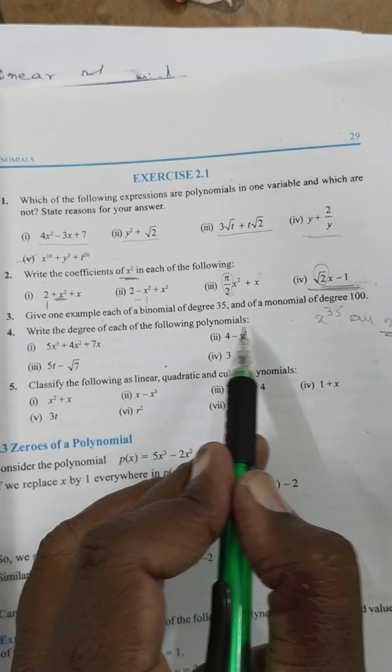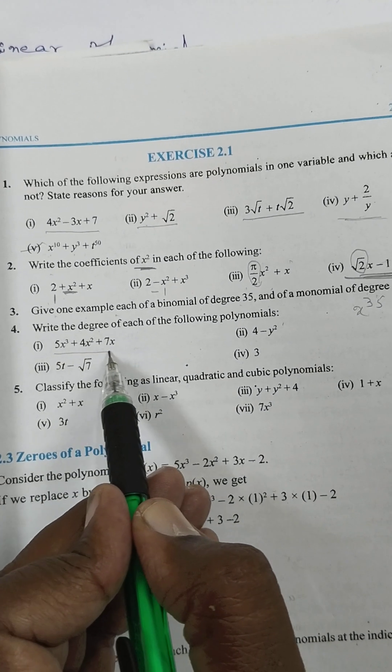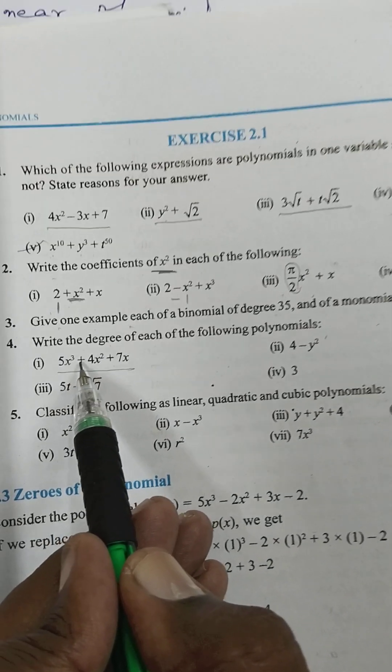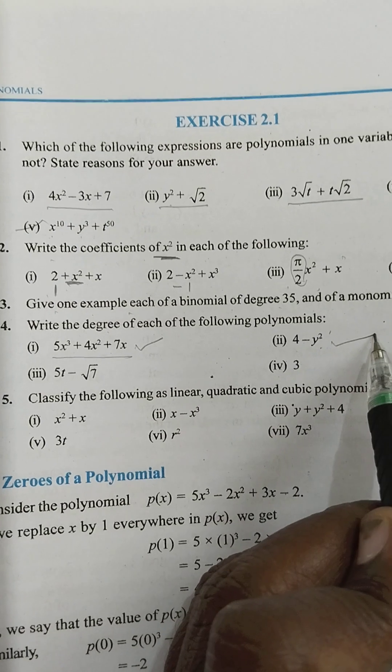Write the degree of each of the following. Degree means which is the highest term in the variable. This is the x variable in this function, so highest value 3, the degree is 3. Here also degree is 2.